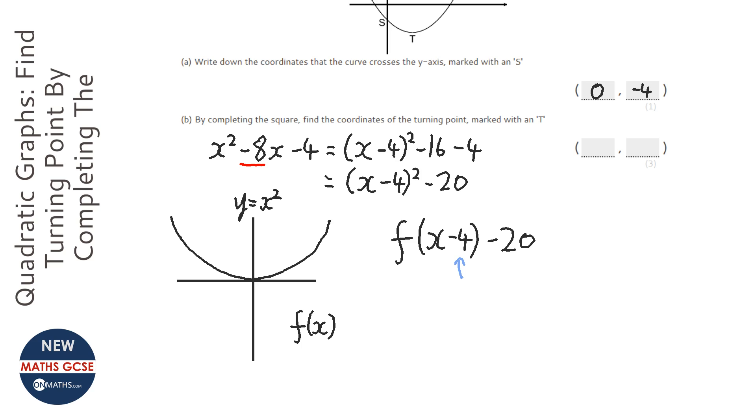So a minus 4 would move it 4 to the right, and anything in here will shift it on the y axis, and actually it will be in the correct direction. So anything inside the bracket affects the x in kind of the opposite direction, and anything outside the function will just affect the y.